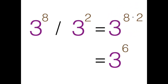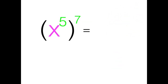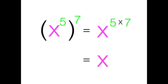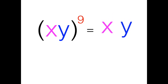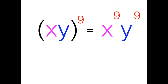Now this is making sense. If I've got powers to powers, I'll multiply, and my answer will be perfect from the bottom to the top. If there's parentheses and there's a product inside, well, factors are raised to the power that's on the outside.